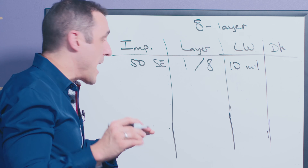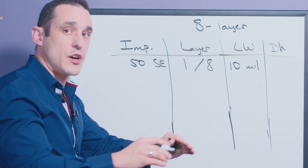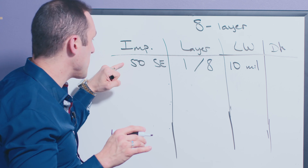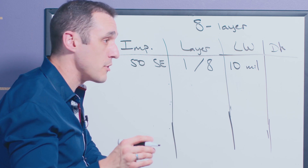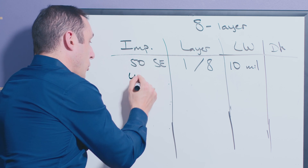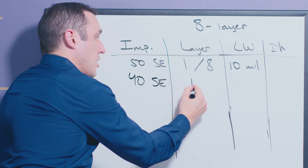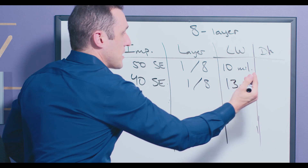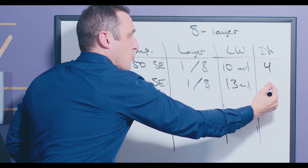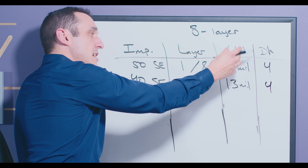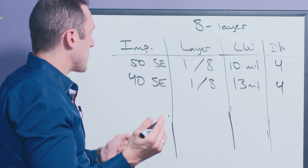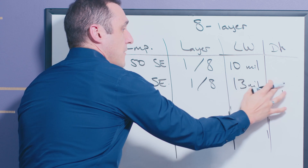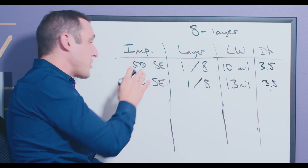Now I want to look at what happens when we have two different impedance profiles specified on the same layer in our stack up table. Let's suppose that on layers one and eight we have this 50-ohm single-ended impedance profile with a 10-mil line width. What happens if we also have a 40-ohm single-ended impedance on layers one and eight with a 13-mil line width? Let's suppose we have a DK value of four for layers one and eight — this is a symmetric stack up with DK4 on both outer layers. What happens if we were to swap a DK4 laminate with a DK3.5 laminate? Can we then continue to use both of these impedance profiles?